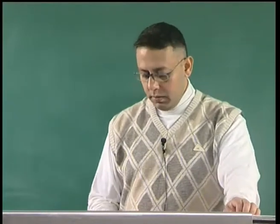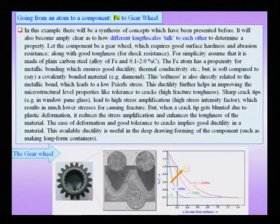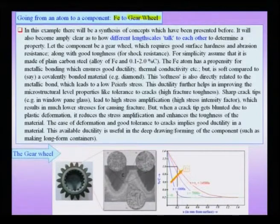The important lesson we learn is that we cannot reside at a single length scale to understand the properties of a material. We will consider one more important example wherein we go from an iron crystal to the entire component which is the gear wheel. Not only are we now talking about material length scales, but also the length scale of an entire component, and we will see how these various length scales interact and how a certain property can be engineered for a particular application like a gear wheel.